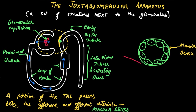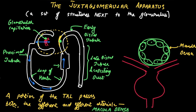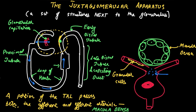So the macula densa is the dense spot that senses the amount of NaCl in the tubular fluid. Lining the afferent arteriole are cells known as juxtaglomerular cells or granular cells. In addition, there are supporting cells — known as lacis cells, also called extraglomerular mesangial cells — which support the whole structure of the macula densa and the adjacent granular cells.